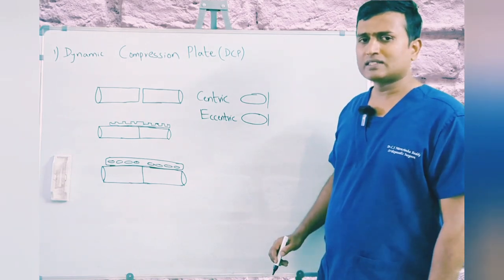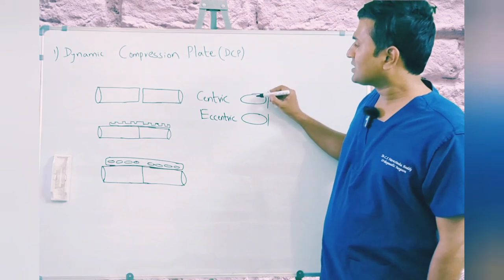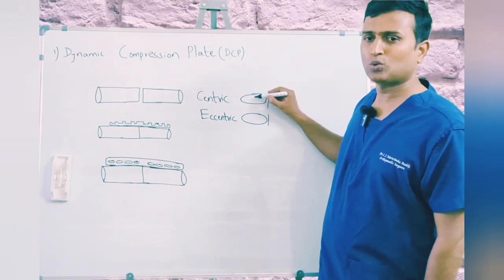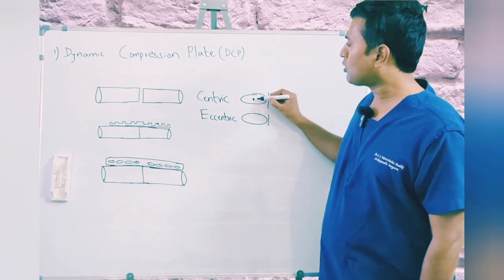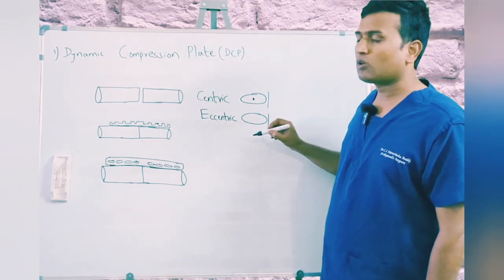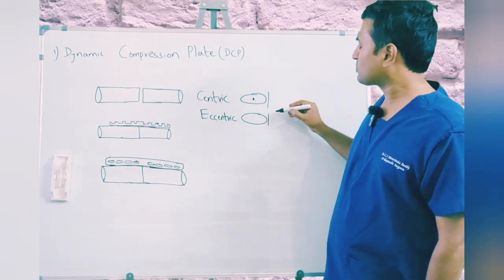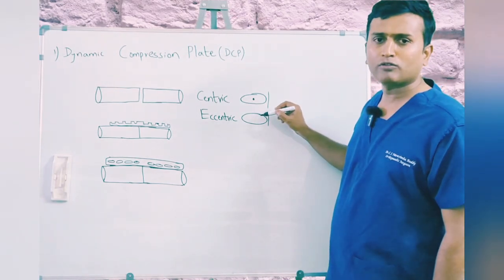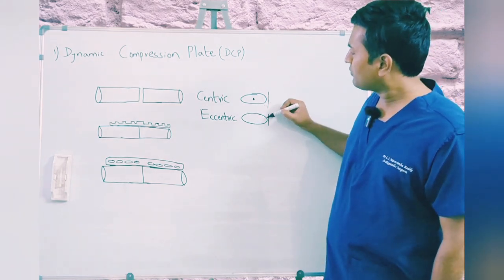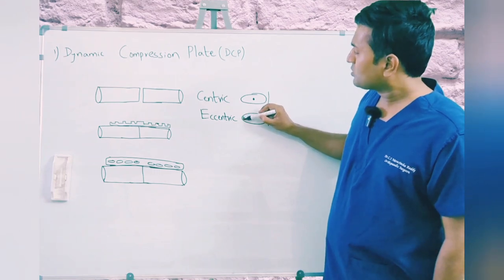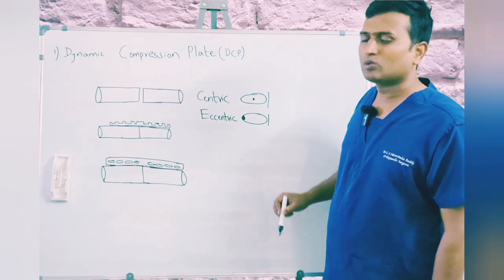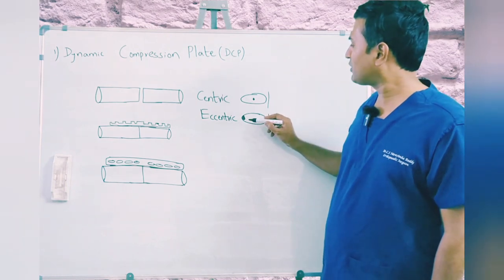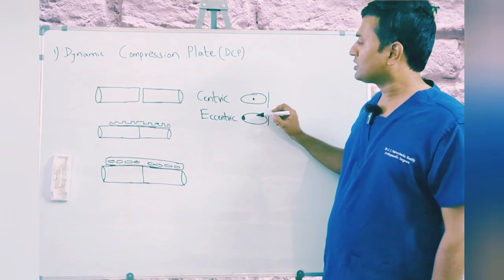Centric means when we fix the screw in the center of the oval hole of the dynamic compression plate — that screw is called a centric screw. Eccentric means fixing the screw away from the fracture line within the oval hole of the dynamic compression plate — that screw is called an eccentric screw.